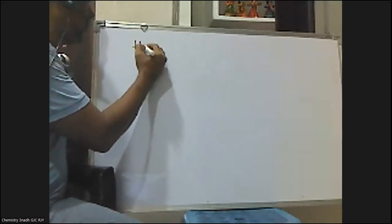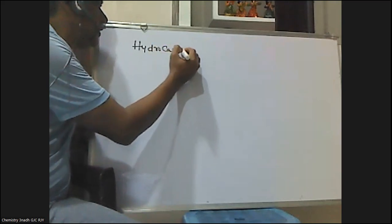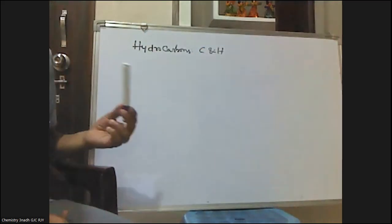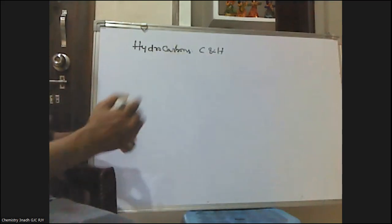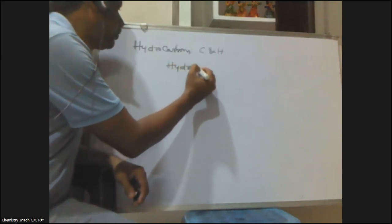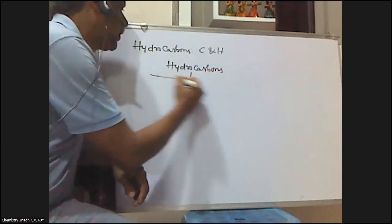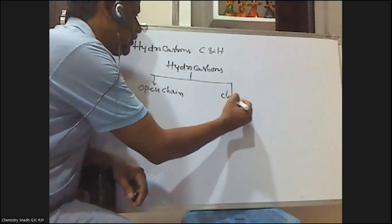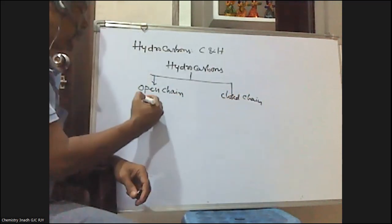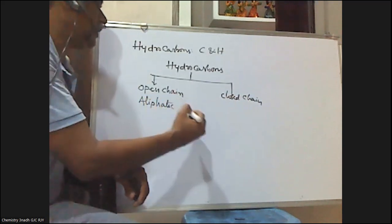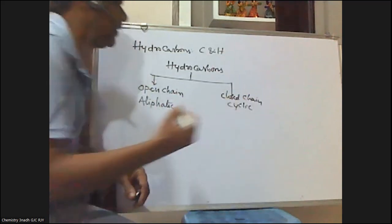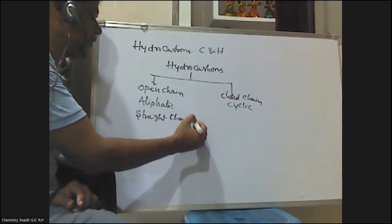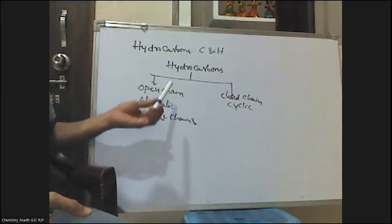Hydrocarbons are the organic compounds containing carbon and hydrogen. These hydrocarbons are classified into two types: one is open chain compounds, and the second one is closed chain compounds. Open chain compounds are also called aliphatic compounds. Open chain compounds contain straight chains and branched chains.